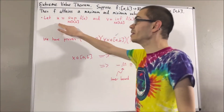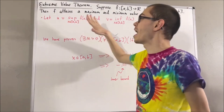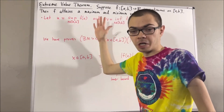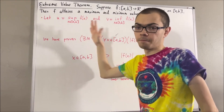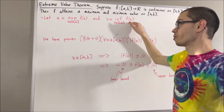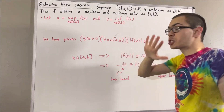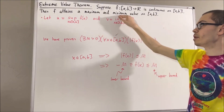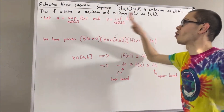The idea is: since u is the smallest upper bound of f, u is an upper bound — so u is greater than or equal to every output value of f. But if we can show that u is itself an output value of f, that tells us u is the greatest output value, proving f has a maximum. Similarly, since v is the greatest lower bound, if v is an output value of f, then v is the minimum value. So to prove the theorem, all we have to do is show that u and v are output values of f.